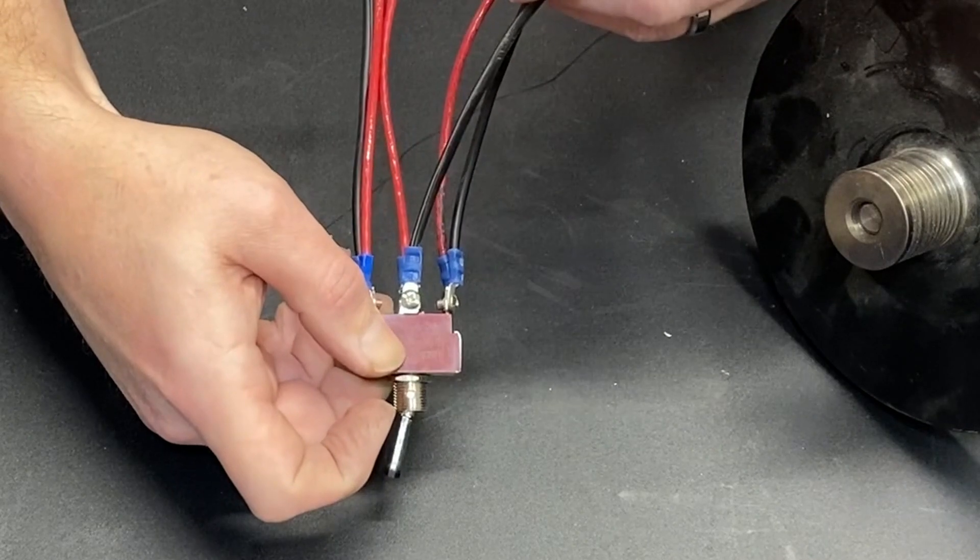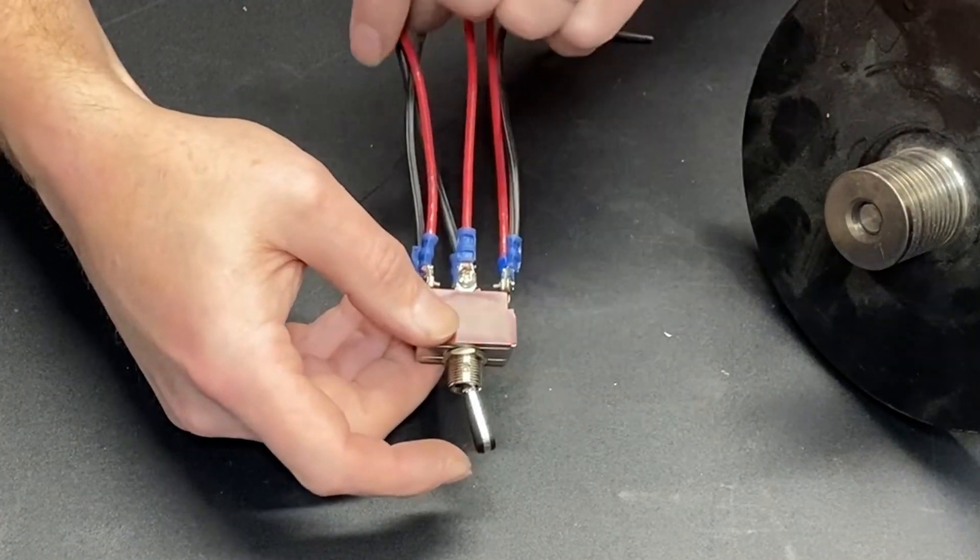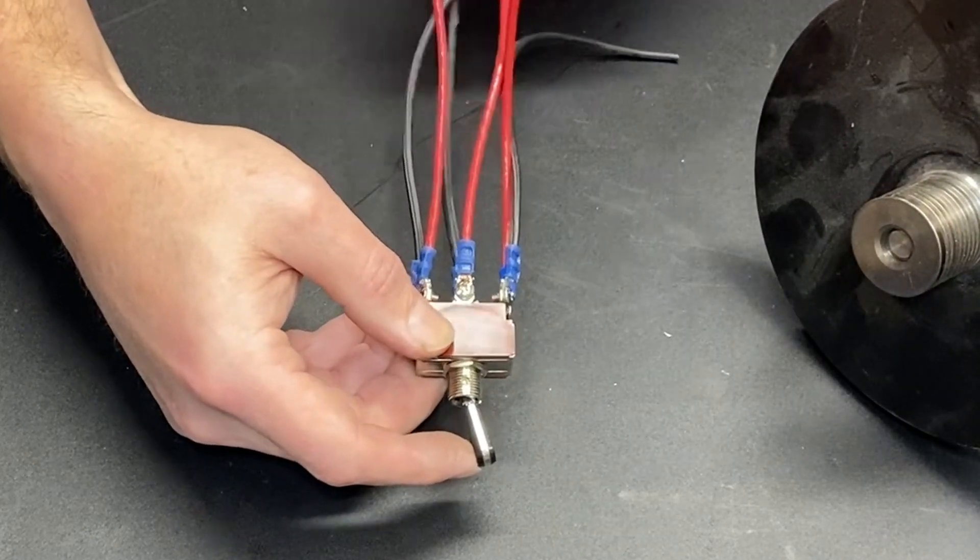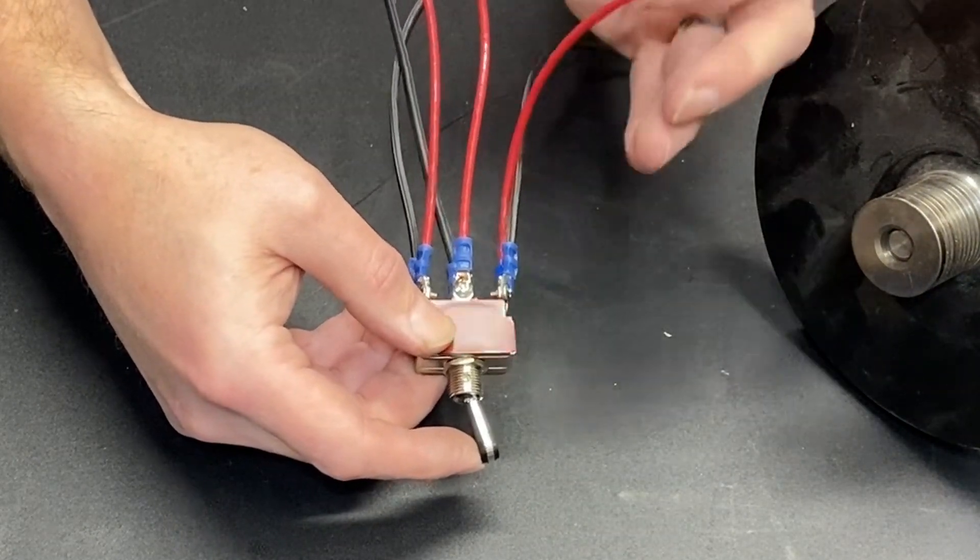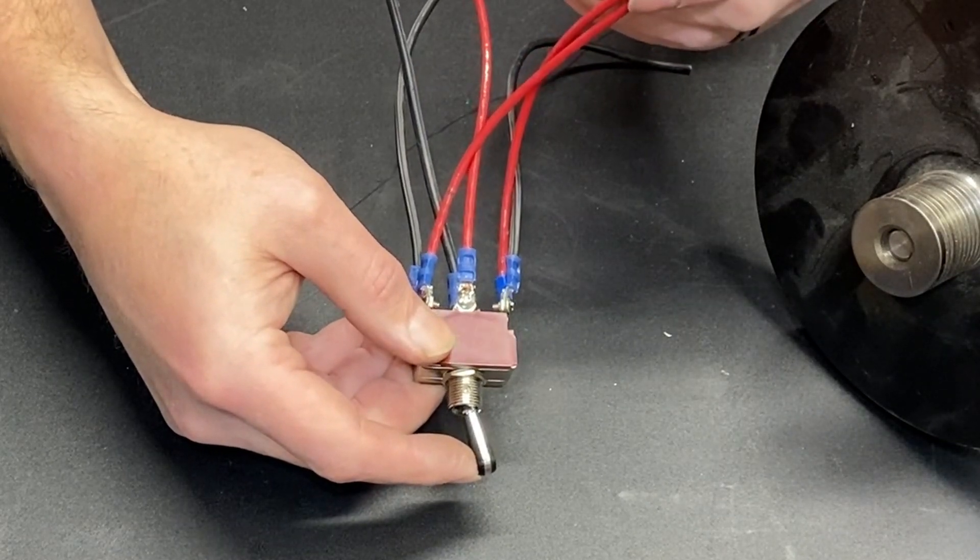If we flip it over, we are connecting red to red. Center two wires, they go to the motor. This red wire and this red wire go to your positive on your power supply.